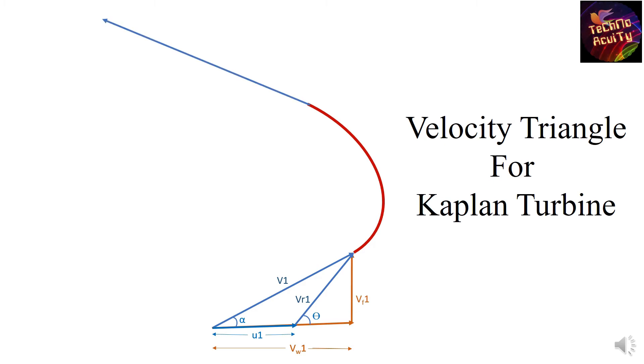Similarly for the outlet, this one is the relative velocity at outlet denoted as vr2. This is u2, that's the blade velocity at the outlet. This one is absolute velocity at the outlet. There are two components of the absolute velocity at the outlet: vw2, that's the whirl velocity at the outlet, and vf2, that's the flow velocity at the outlet.